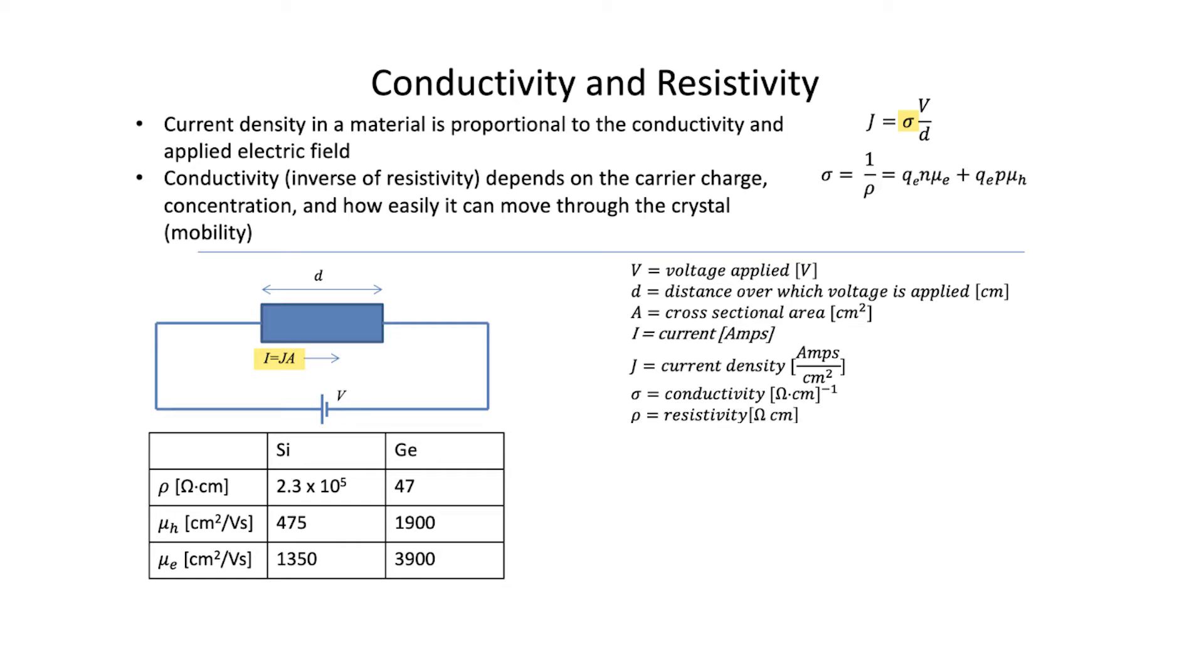Conductivity is the inverse of resistivity, rho. What are all the things that influence the conductivity of a material? Well, the charge certainly plays a role. Q sub e is just the charge of an electron or a hole, 1.6 times 10 to the power minus 19 coulombs. It's just a constant. Naturally, the number or concentration of electrons in the conduction band n or the number of holes in the valence band p play a role too.